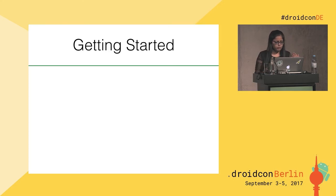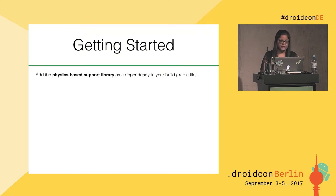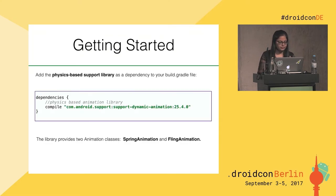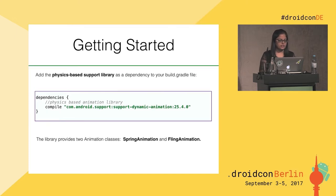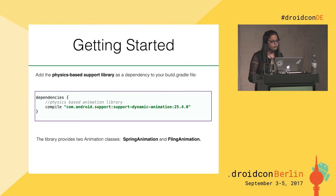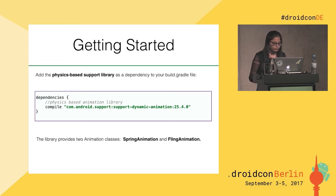In order to get started, you need to add the physics-based support library in your Gradle file. This library provides two classes: spring animation and fling animation. I'm going to walk you through these two classes and how to create cool effects using them.